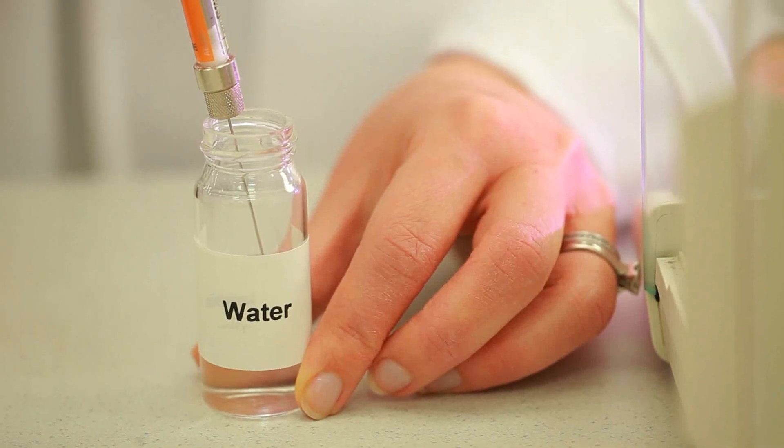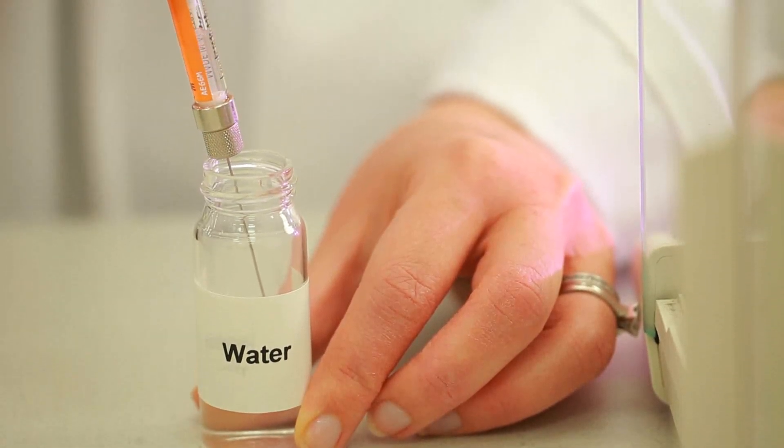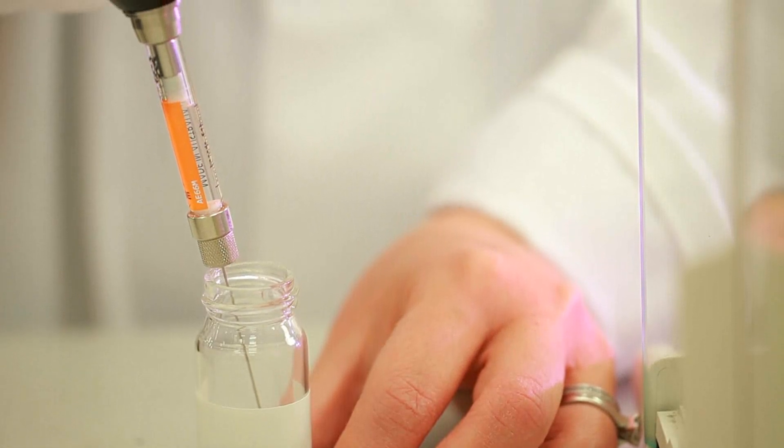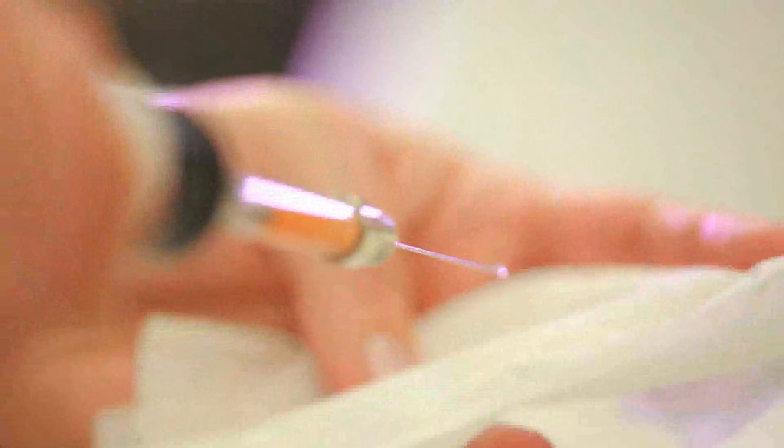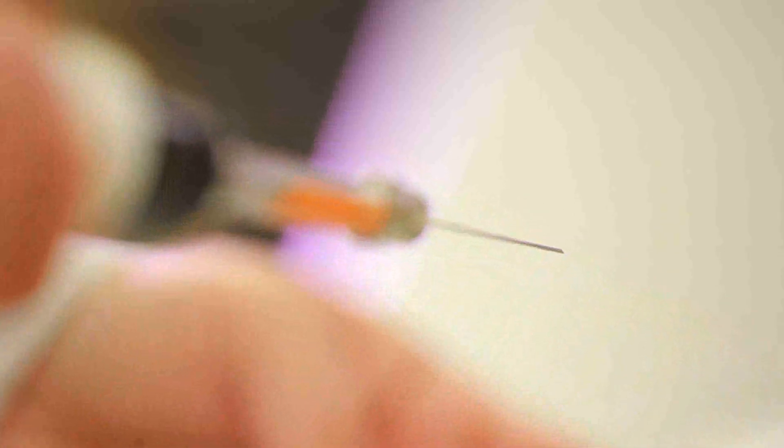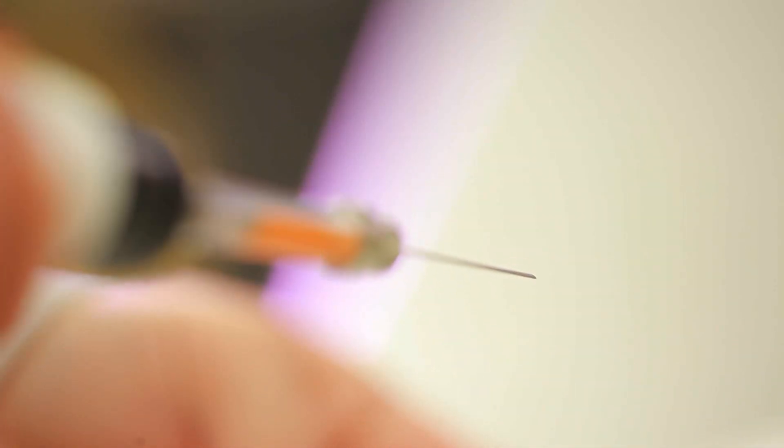After setting aspirate volume and the aspirate and dispense speeds on the EVOL, aspirate the calibration liquid into the syringe. Then wipe the outside of the needle tip with lint-free tissue, making sure no drops of liquid will remain on the needle tip when weighing the dispensed liquid.